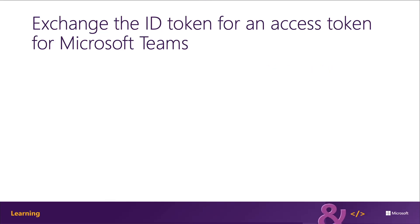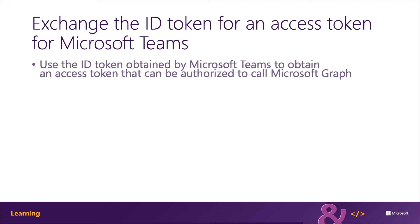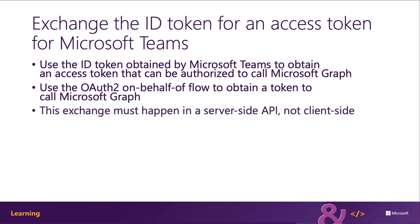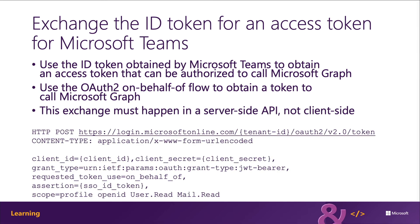When you want to submit requests to Microsoft Graph from your tab, you need to obtain an access token from Azure AD to include in your request. The Microsoft Graph access token is obtained from Azure AD by exchanging the initial ID token that Microsoft Teams received. This must be done server-side using the OAuth 2 on-behalf-of flow, so your tab implementation must provide an API to receive the ID token and submit the request to Azure AD for a valid Microsoft Graph access token.